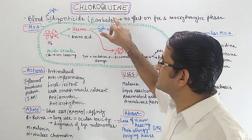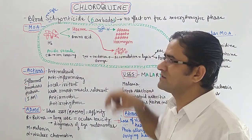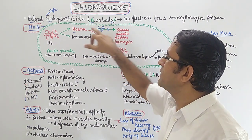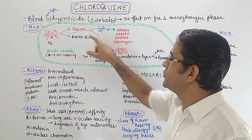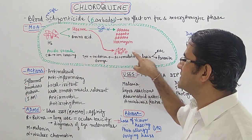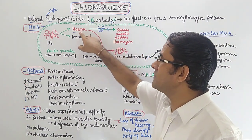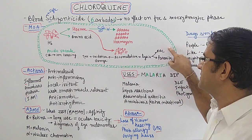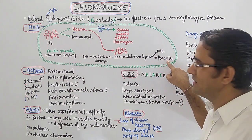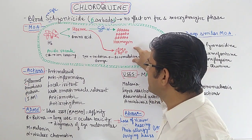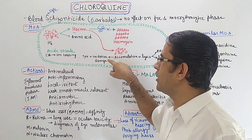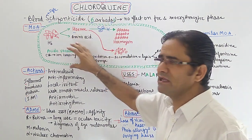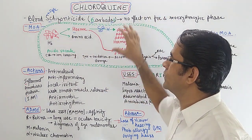The heme, which is toxic in nature, is normally polymerized to form hemozoin, which is non-toxic. Chloroquine inhibits the polymerization of heme into hemozoin, causing heme accumulation. Being toxic in nature, accumulated heme causes lysis of RBCs and parasites. There is also oxidative damage and increased pH, producing a lethal effect on the parasite.